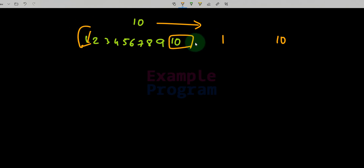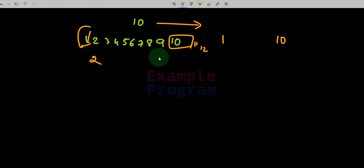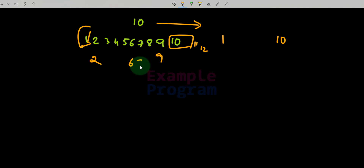We also know that numbers greater than 10 can't be factors of 10, because they can't divide the number completely. So we don't have to check for 11, 12, etc. The possible range of numbers which can be factors are from 2 to 9. And we can also say that 6, 7, 8, and 9 can't be factors of 10.